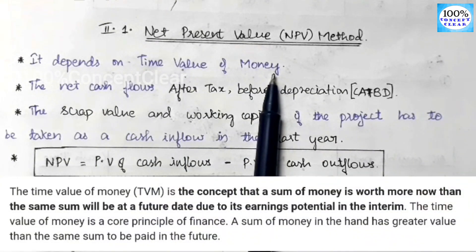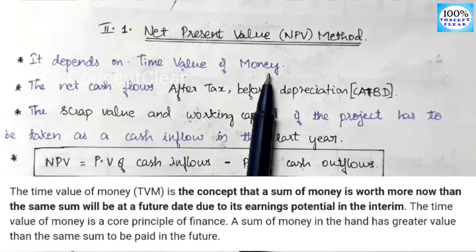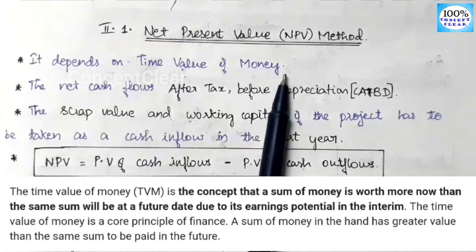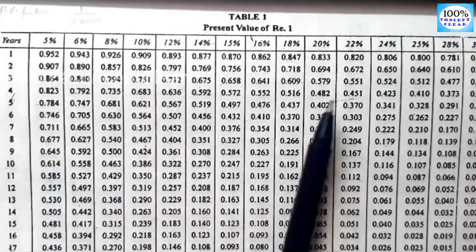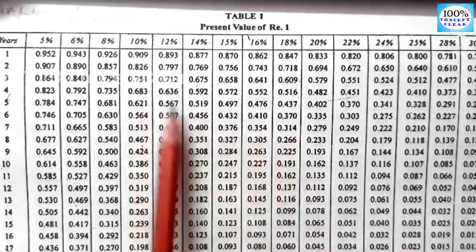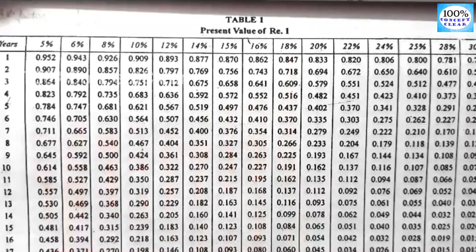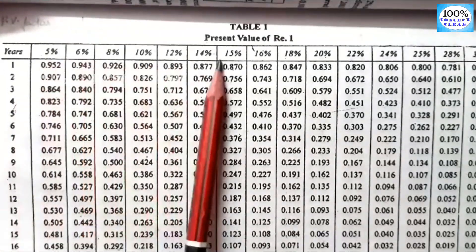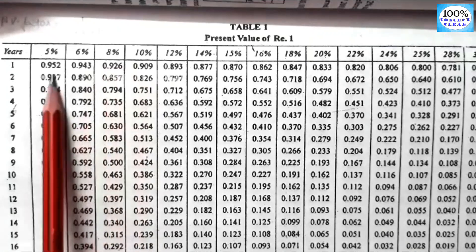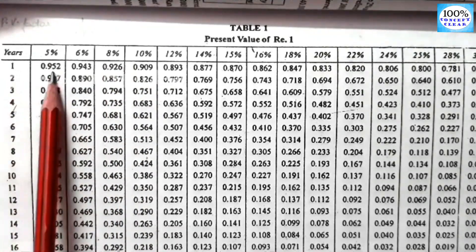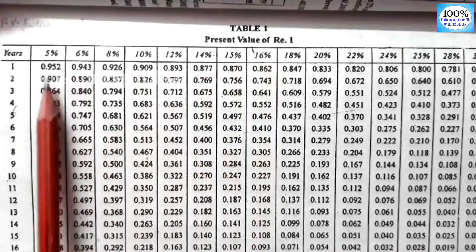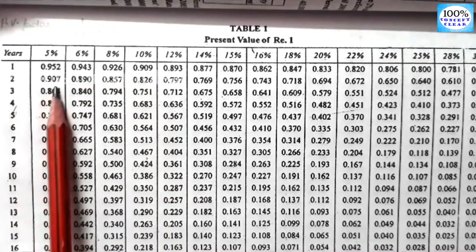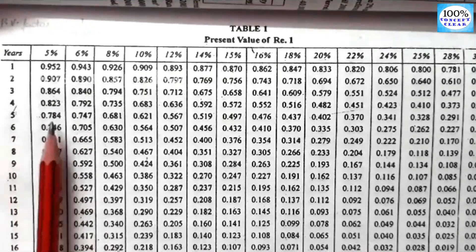The time value of money concept means the value of money changes over time — it decreases. If you look at the present value table, you will see how the value decreases each year. At a given percentage, in the first year the value of one rupee is 0.952, in the second year it is 0.907, and in the third year it is 0.864. So the value decreases each year — this is the time value of money.